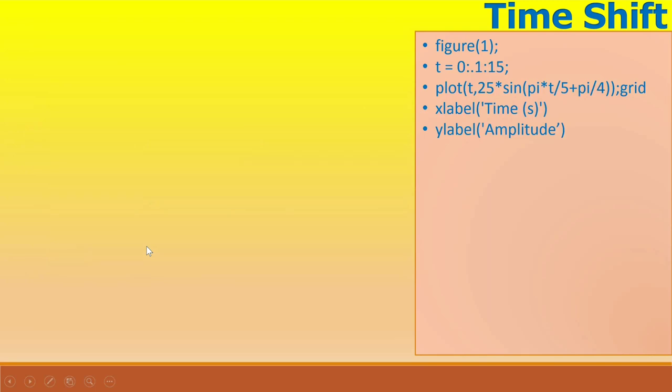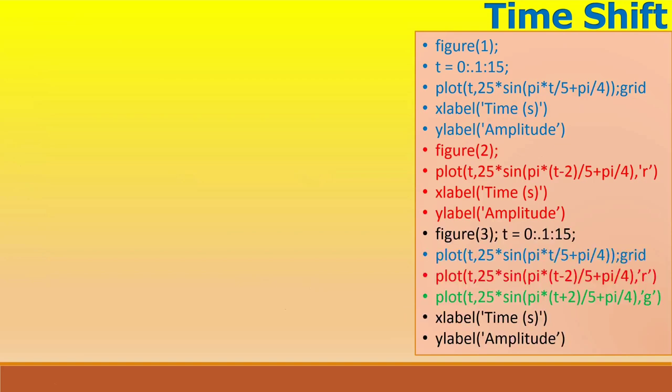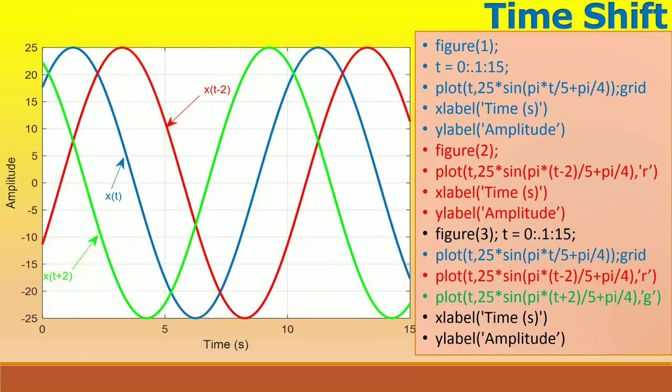Next we generate a time shifted or delayed version of the signal in the red color. Please see the parameter t-2 in the plot command and note the corresponding zero crossings at 5.75 and 10.75 seconds. Finally we show the advanced version along with the original and delayed signals. The green color corresponds to the original, while the red is the delayed version and green is the advanced version, each by 2 seconds.